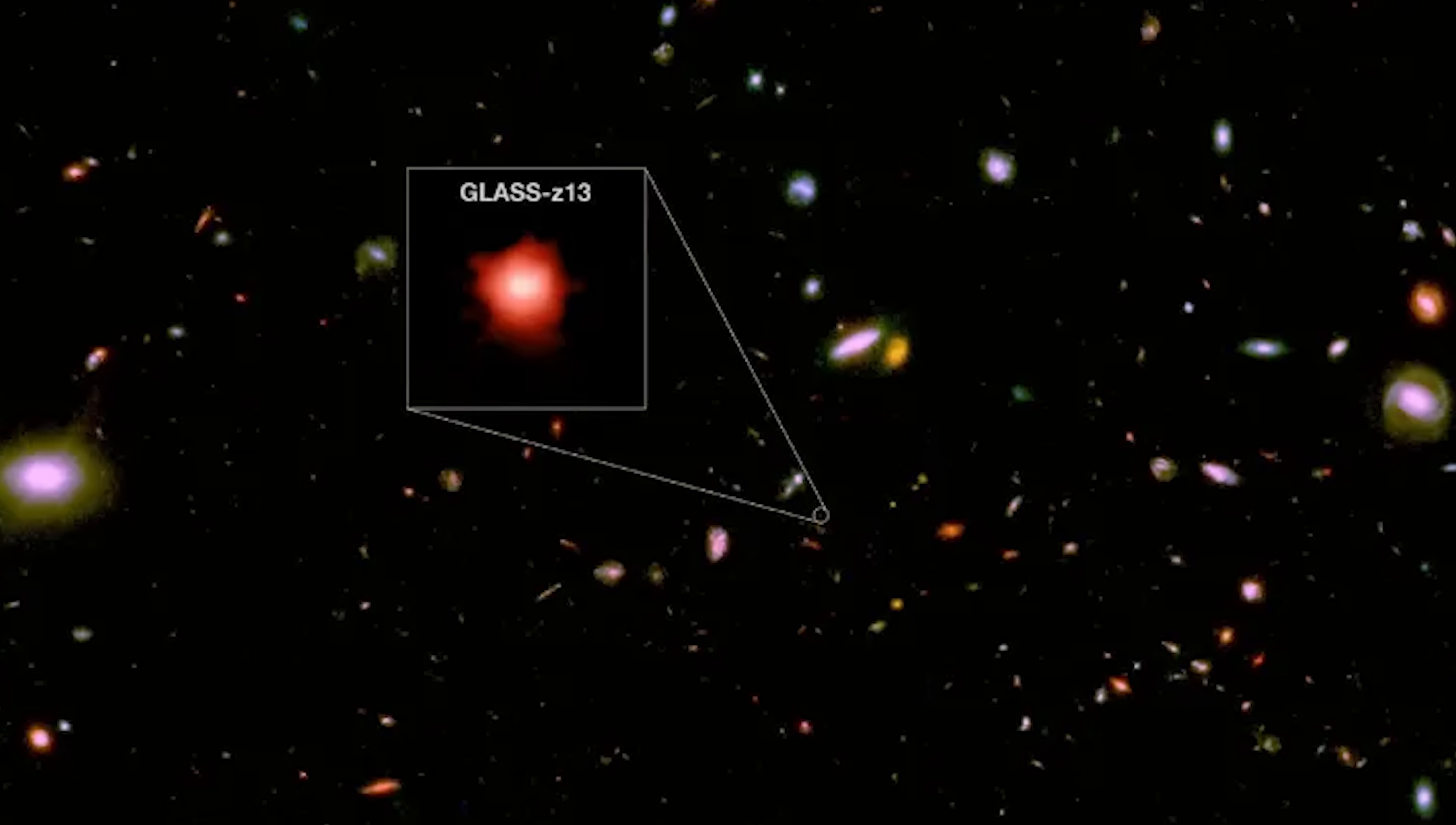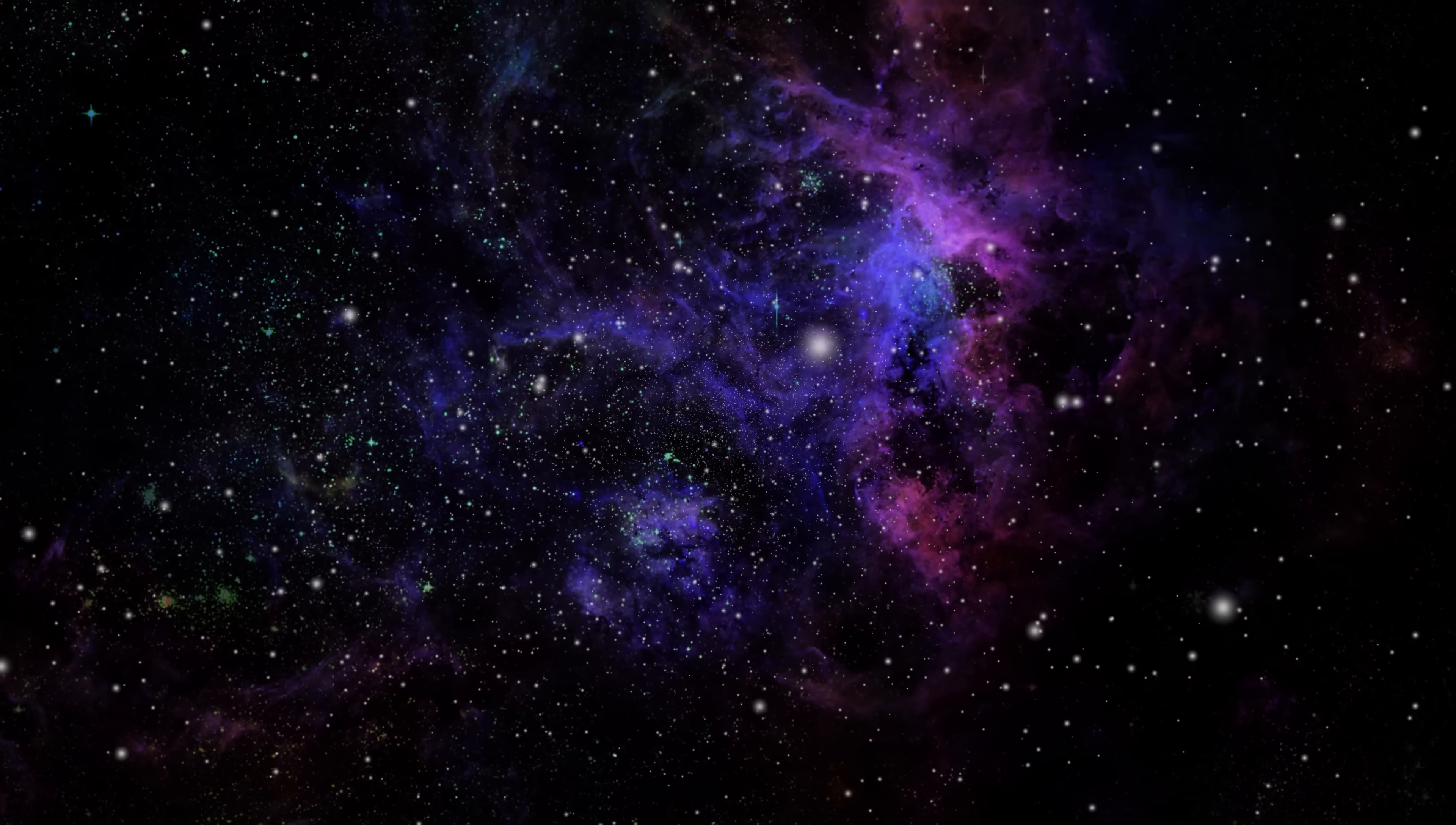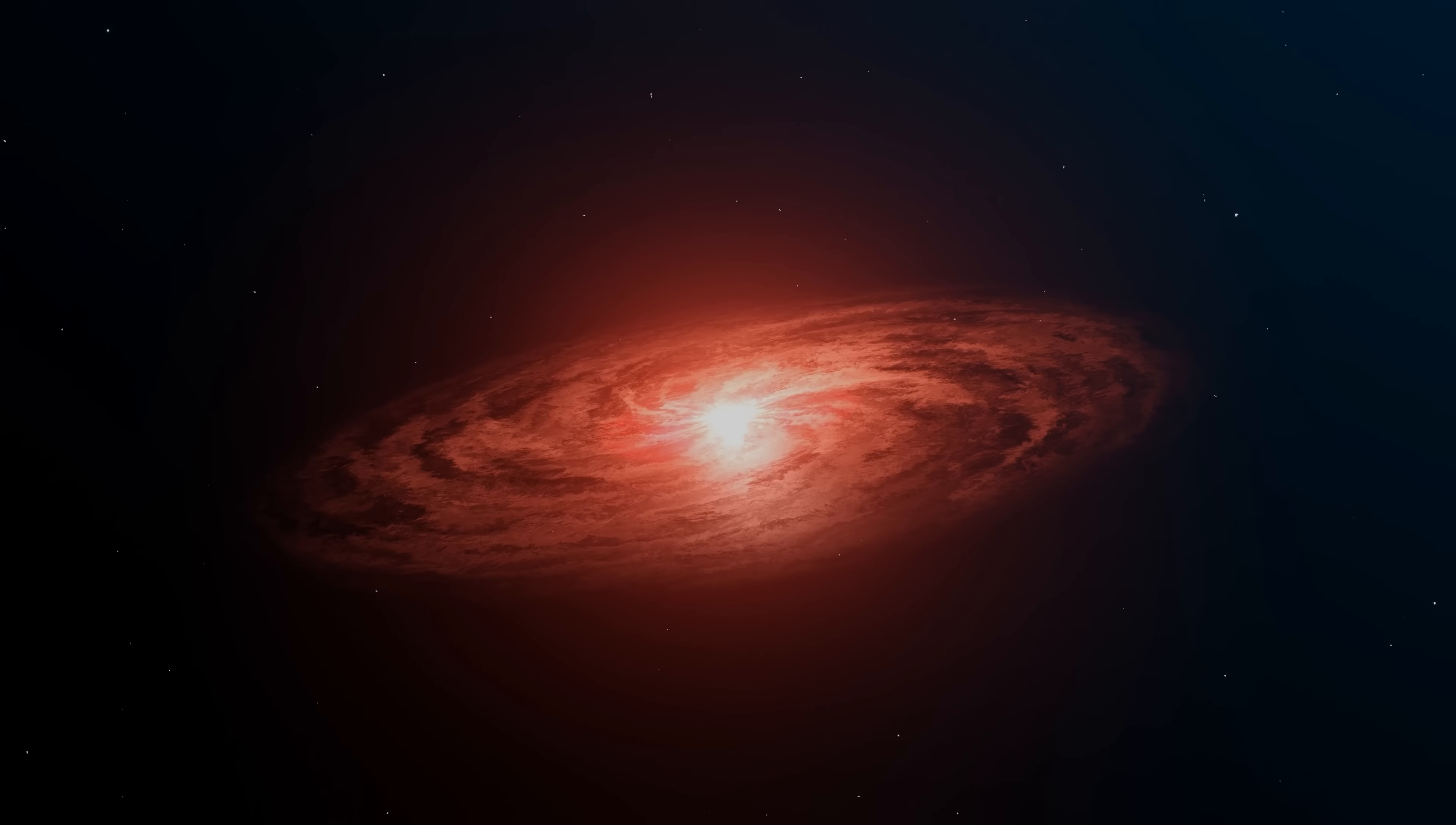The most shocking of these, a galaxy dubbed GLASS-Z13, appears to have existed just 300 million years after the Big Bang, yet looks as mature as our Milky Way. But the real jaw-dropper came when researchers noticed something lurking in these galaxies' cores. Supermassive black holes that are far too large for their cosmic age. One particular black hole found in galaxy CEERS-1019 weighs in at a staggering 10 million times the mass of our Sun.